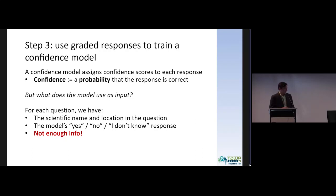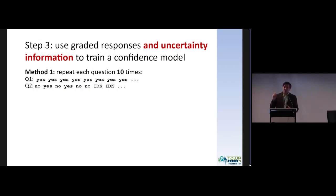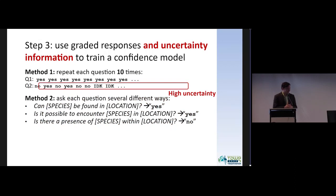This isn't enough information — we need more uncertainty information. The first approach we took was to repeat each question 10 times. ChatGPT is not necessarily deterministic, so it can give you a different response every time. Our intuition was that if it responds the same answer every single time, it's pretty certain; if it changes its answer as you ask it, it might be uncertain. A second approach was to ask each question in different ways, since language models can be sensitive to phrasing even when questions mean the same thing — for example, "can species be found in location" versus "is there a presence of species within location" might give different answers.